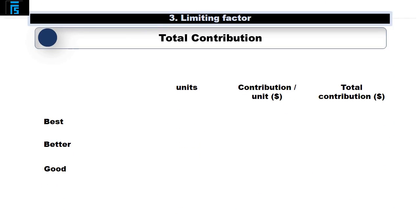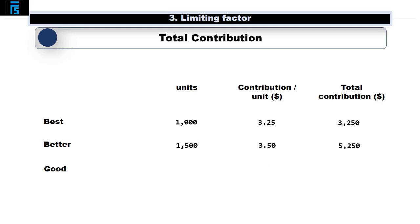The final step is to work out the total contribution we will generate by following this production plan, using the contribution per unit multiplied by the number of units from our production plan. Each Best generates $3.25 per unit and we plan to make 1,000 units. Betters generate $3.50 contribution per unit and we plan to make 1,500 units, giving total contribution of $5,250. Goods generate $2 contribution per unit and we plan to make 2,250 units. The total contribution for all 3 products is therefore $30,000.